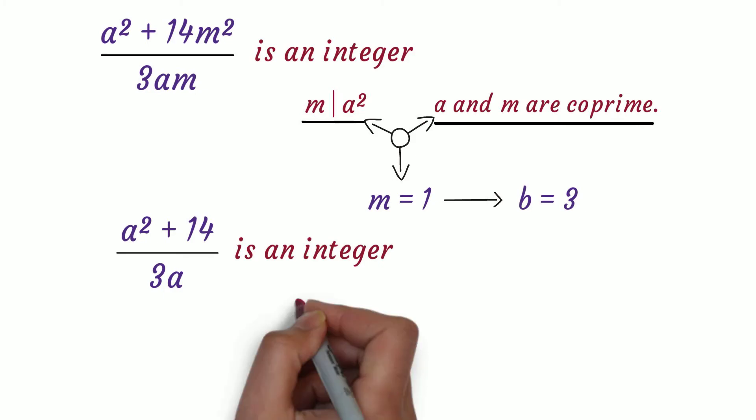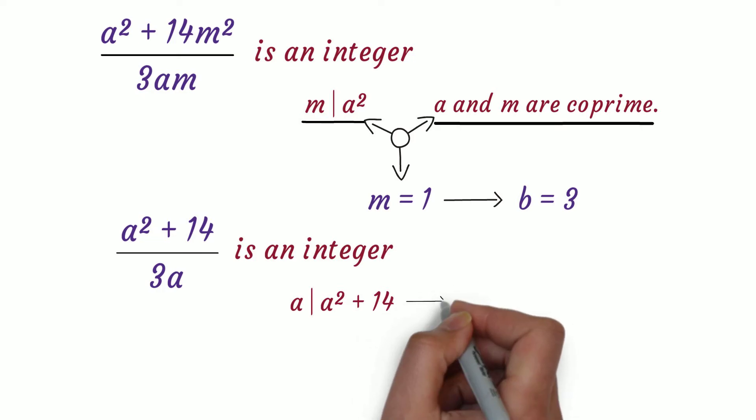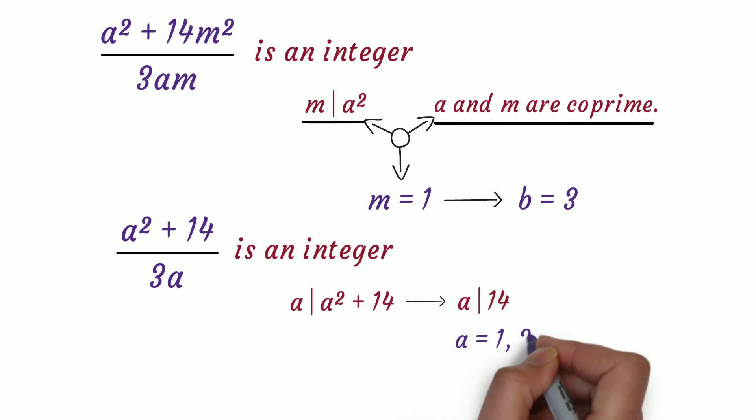Since a divides the denominator, a must also divide the numerator. As a already divides a², a must divide 14. So checking for all possible factors of 14, we have a = 1, 2, 7, and 14.